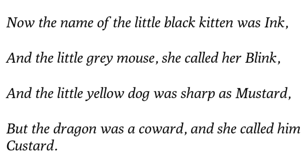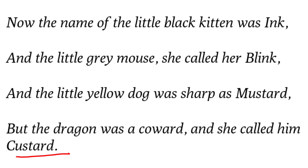But the dragon was considered a coward and she called him 'Custard'. Though the dragon was actually brave — as we read in the introduction — everyone including Belinda, the owner, considered him to be a coward. The lady had given him the name Custard. Custard is an edible item. So the first part describes the setting — the wagon, Belinda's pets, and their naming.